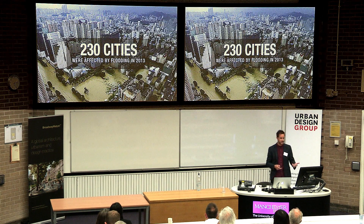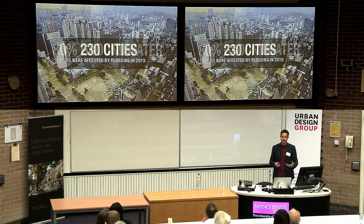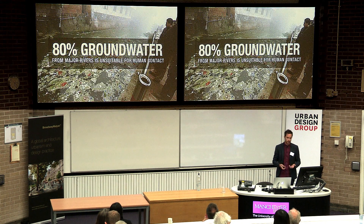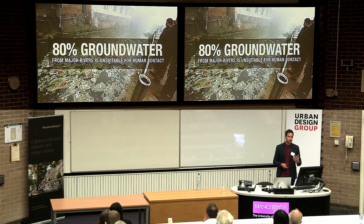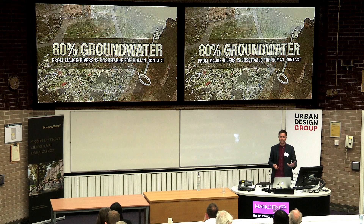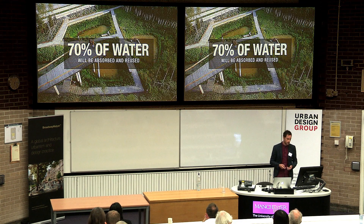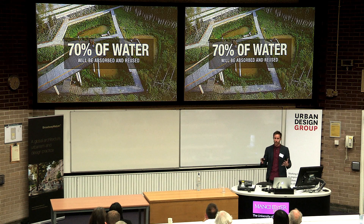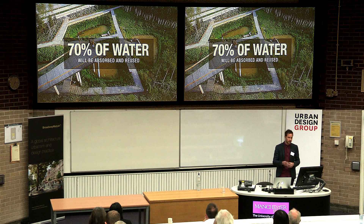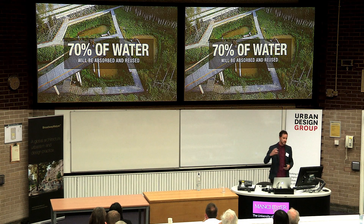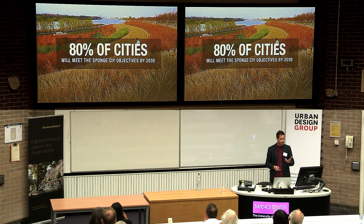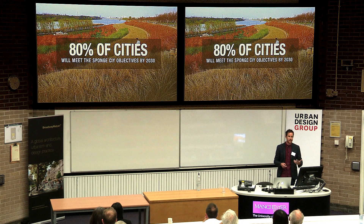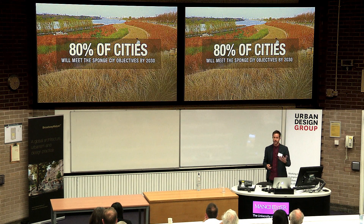The reason for this investment is stark: 230 cities in China flooded in 2013, and this is increasing every year. The urban realm is completely saturated with water due to lack of permeability. 80% of groundwater from major rivers is unsuitable for human contact — pollution and poor water quality are critical issues. But the Chinese can shift their approach very quickly. They've set radical targets: 70% of water will be absorbed and reused in all cities by 2030, and 80% of cities will meet sponge city objectives by 2030.